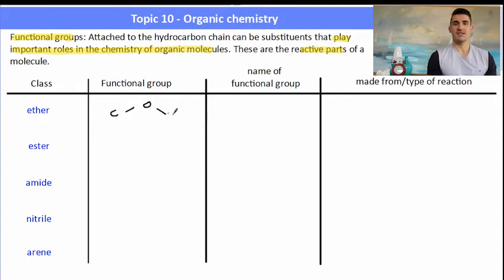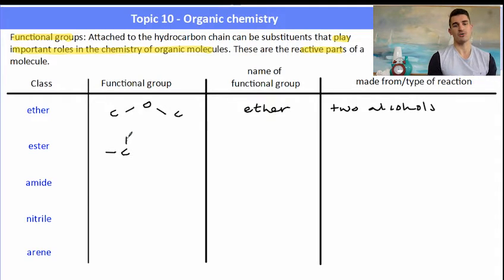Now an ether contains a carbon, single bond oxygen, single bond to another carbon. The name of that functional group is called an ether and it belongs to the class of ethers. Now how do ethers come about? Well they're usually formed from two alcohols.